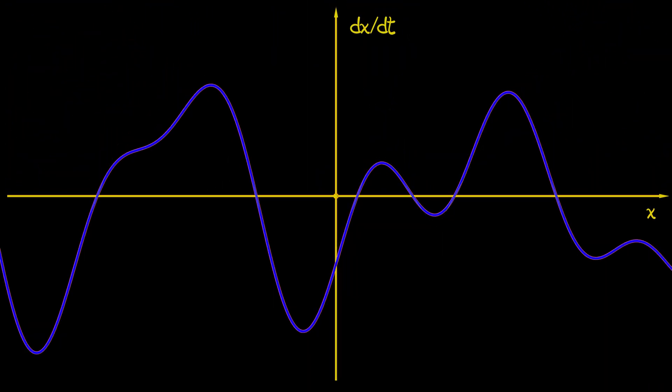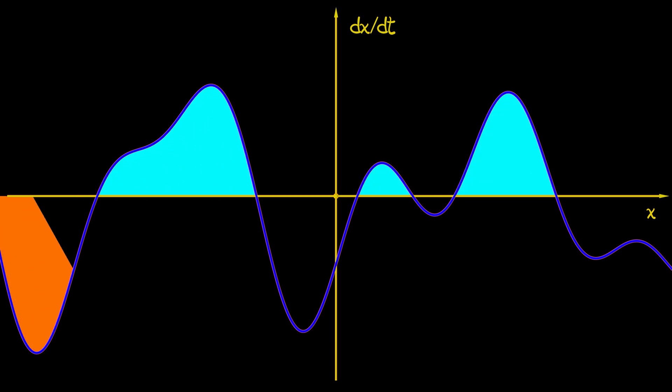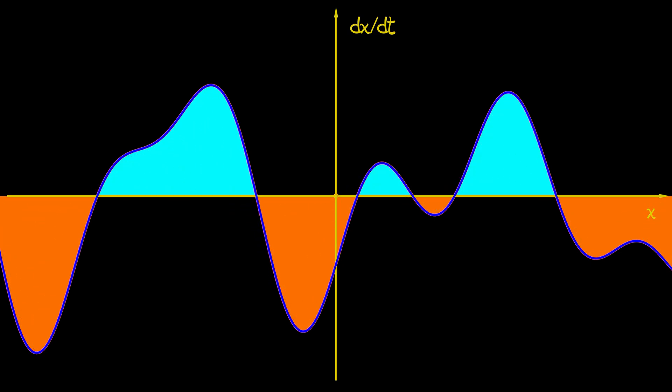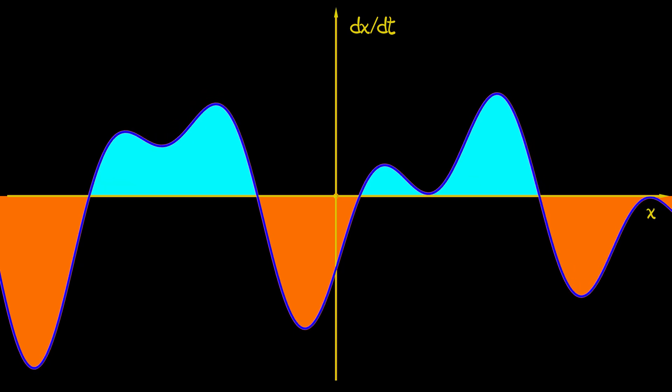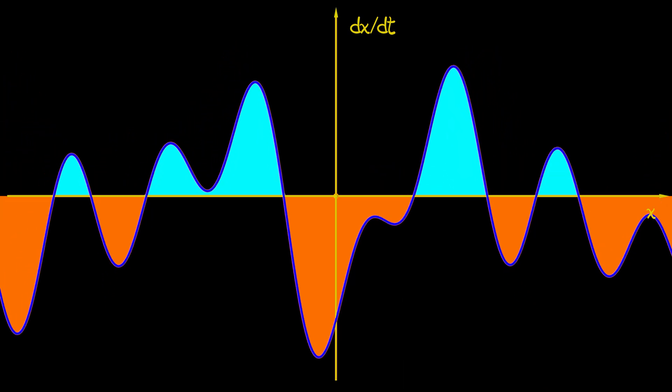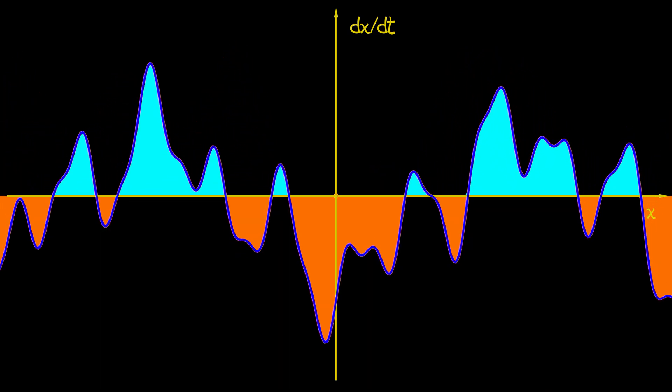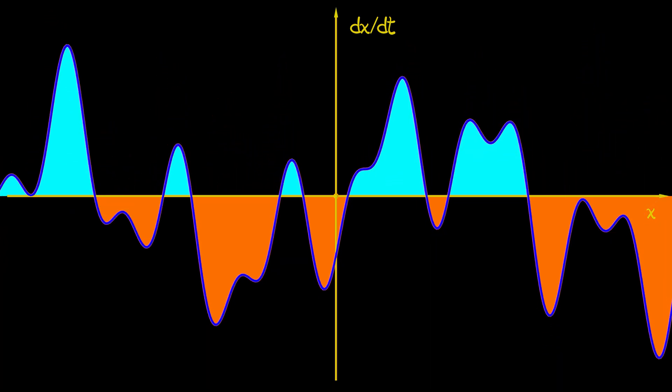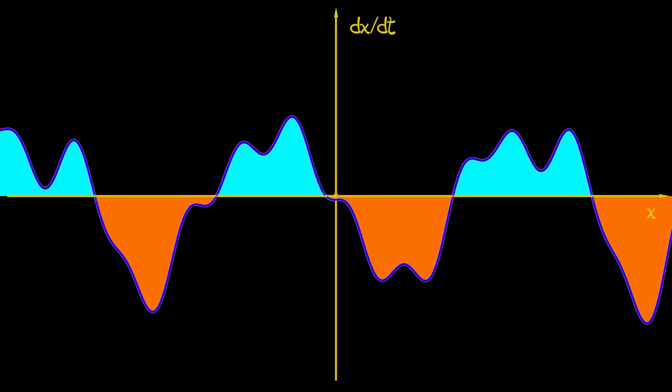But it's even better if we zoom back out and we consider just large scale, where are the regions? Where the derivative is positive, that means x is increasing. Where the derivative is negative, that means x is decreasing. Then look, it doesn't really matter what is happening in between the equilibria. We could have a really, really complicated function. And the only thing that matters is what is happening right there at the equilibria.